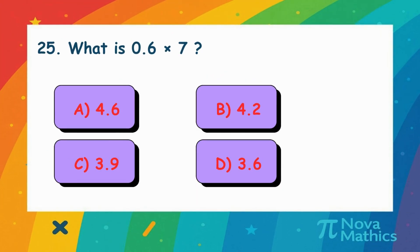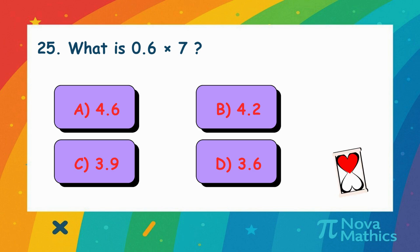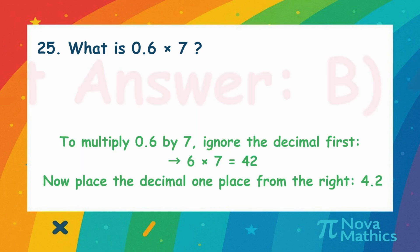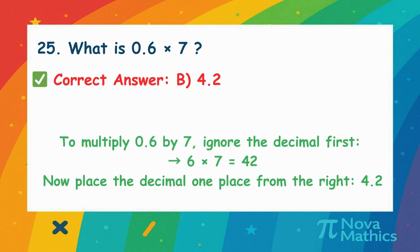24. What is 0.6 times 7? Let's multiply 0.6 by 7. First, think of it without the decimal. 6 times 7 is 42. Now put the decimal back one place. That's 4.2.